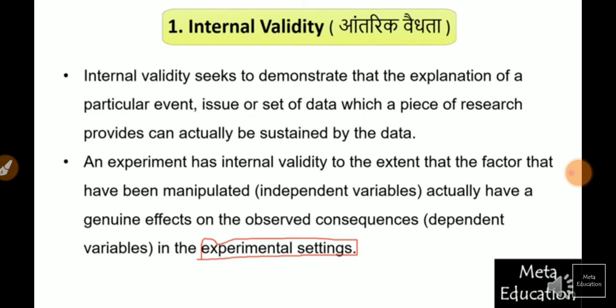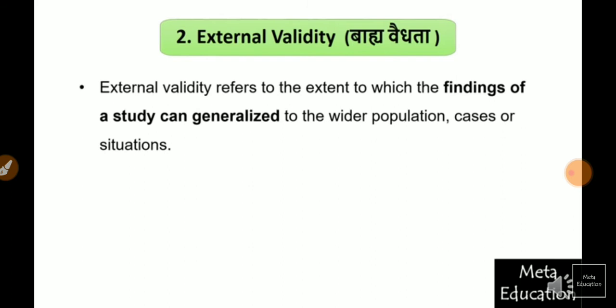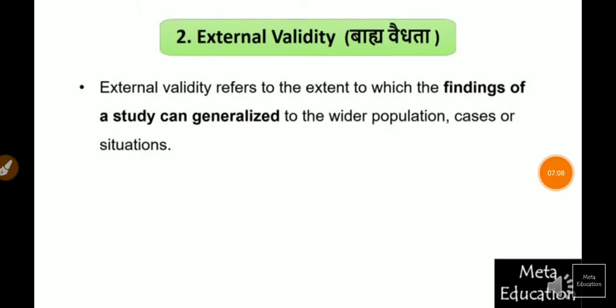I hope that is clear. If there is any doubt, please comment and tell us. Second is external validity. External validity refers to the extent to which the findings of a study can be generalized to the wider population, cases, and situations.